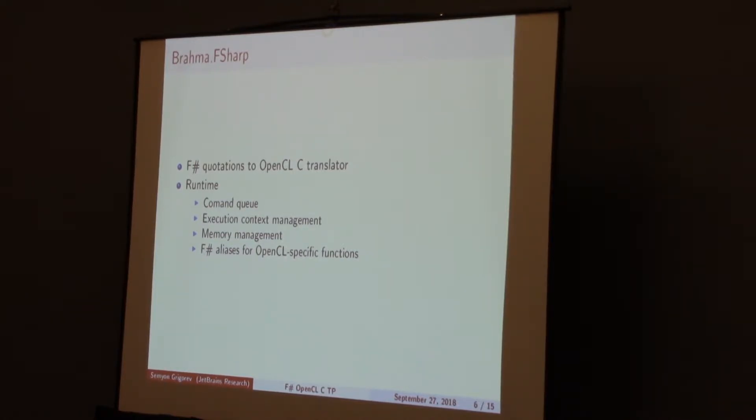One of the solutions which provides the ability to translate high-level language to low-level language is Brahma.FSharp. Brahma.FSharp is a translator from F# quotations to OpenCL C. Of course, only a small subset of F# can be translated. But the subset is expressive enough. Also, Brahma.FSharp provides an appropriate runtime which can help you to handle OpenCL exceptions, to simplify data transfer and kernel work.